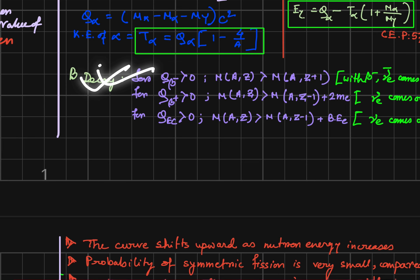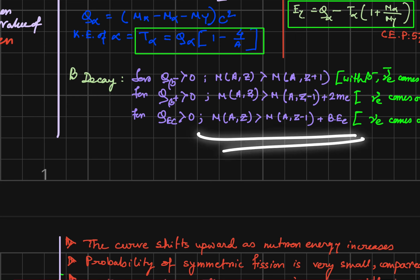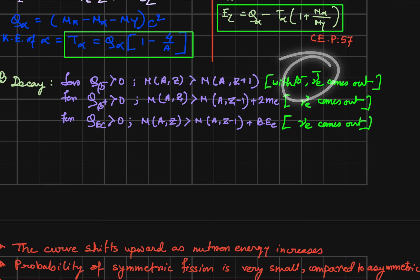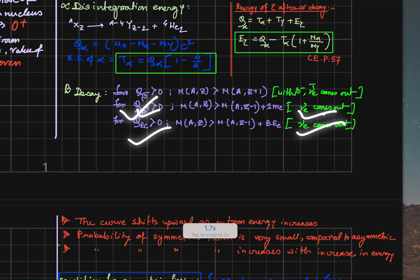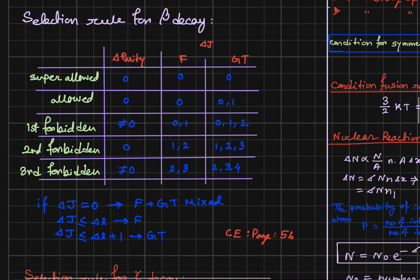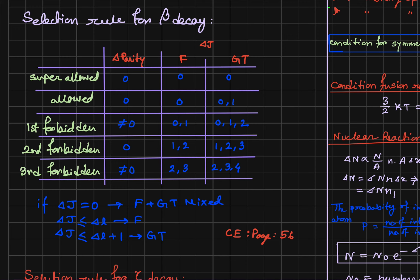There are three types of beta decay: beta minus decay, beta plus decay, and electron capture. These are the conditions for which each decay is feasible. With beta minus, an antineutrino comes out; for beta plus and electron capture, an electron neutrino comes out. This first page is over, with about half a page remaining.